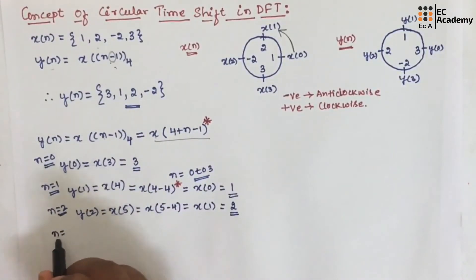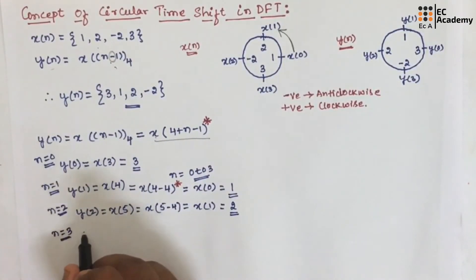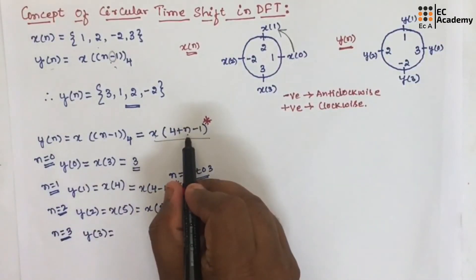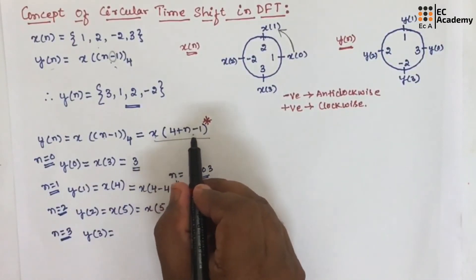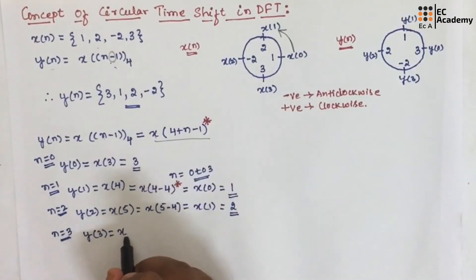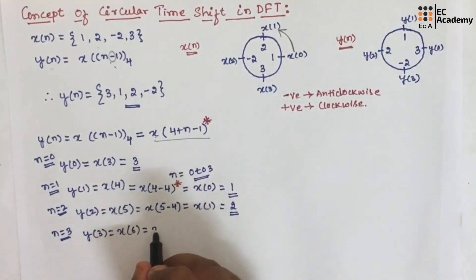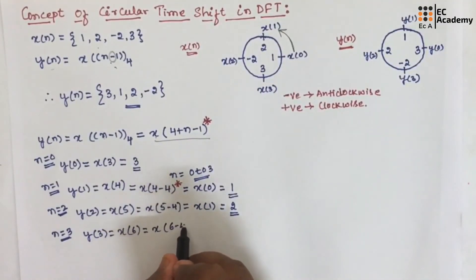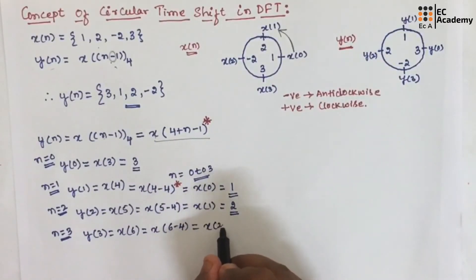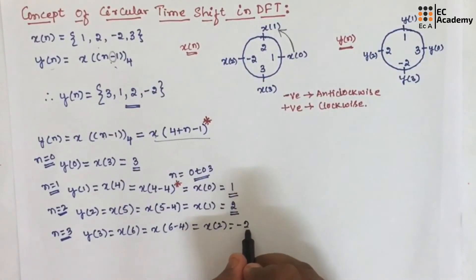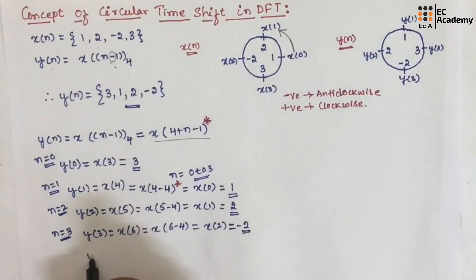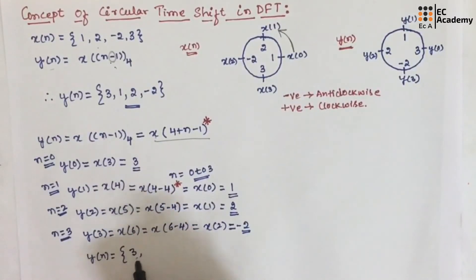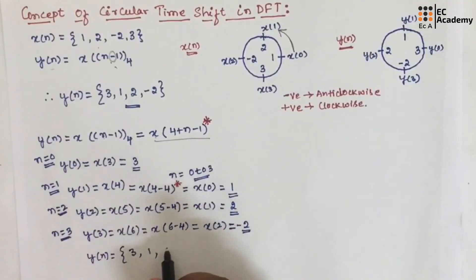If we put n equal to 3, y of 3 will be equal to x of 4 plus 3 minus 1, which is x of 6. Again it is exceeding the range of n, so we write x of 6 minus 4, which equals x of 2. x of 2 is minus 2, so y of 3 is minus 2. Therefore y of n is {3, 1, 2, minus 2}.